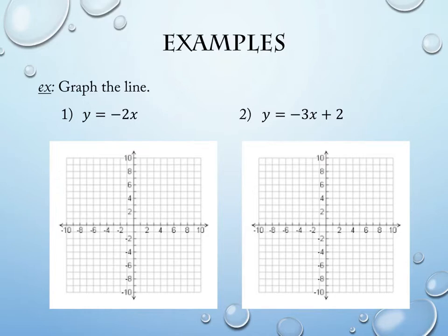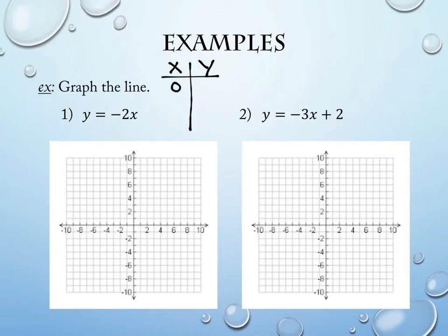We have several lines to plot. The first is y = -2x. We need to plot a minimum of two points, and you can pick what those two points are. I'm going to make an XY table, pick a value for x, and figure out its corresponding y value. Zeros are lovely — picking zero is often a very nice choice since it simplifies things. If x = 0 in this equation, what will y be? It's zero on this one — that doesn't always happen, but it did here.